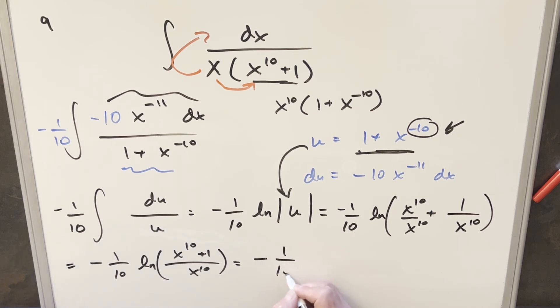So we'll have this minus 1 over 10, natural log x to the 10 plus 1. And then for this, we'll have this as minus natural log x to the 10, but minus times minus is going to be plus 1 over 10, natural log x to the 10.